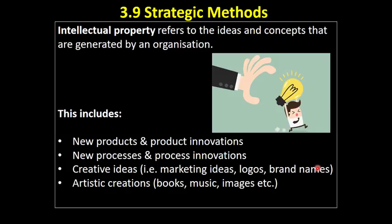Ideas that the business comes up with in order to promote its product, or artistic creations that an organisation owns — publishing houses, record companies, and so on. All of these are examples of intellectual property — basically ideas that the organisation has come up with. And organisations will want some way to protect these ideas.